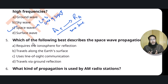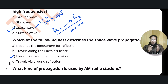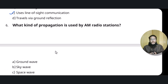Question number five: which of the following best describes space wave propagation? As just mentioned, it is also called line of sight communication, because the transmitting antenna and the receiving antenna are in the same line — that is why it is named line of sight communication.